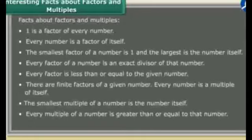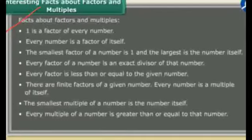The first fact is: 1 is a factor of every number. Obviously, 1 is a factor of every number. If I say two ones are two, then 2 is one. Three ones are three, four ones are four. It means 1 is a factor of every number.